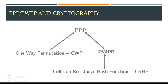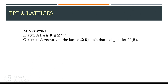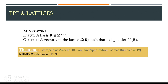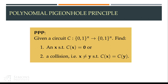Let's see some connections with lattices. I'll start by showing a reduction from Minkowski to PPP. In the Minkowski problem, we're given a basis B of a lattice, and the output should be a vector in the lattice with infinity norm less than one over N. We construct a circuit mapping points of a rectangle to the parallelepiped of the lattice, reducing modulo the parallelepiped. If we find a collision, the two points map to the same point, so their difference is in the lattice; if we find a pre-image of zero, that point is directly in the lattice.